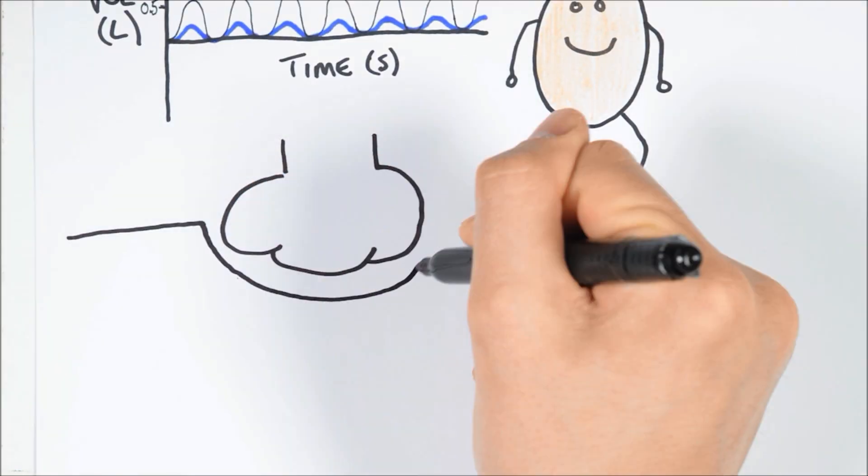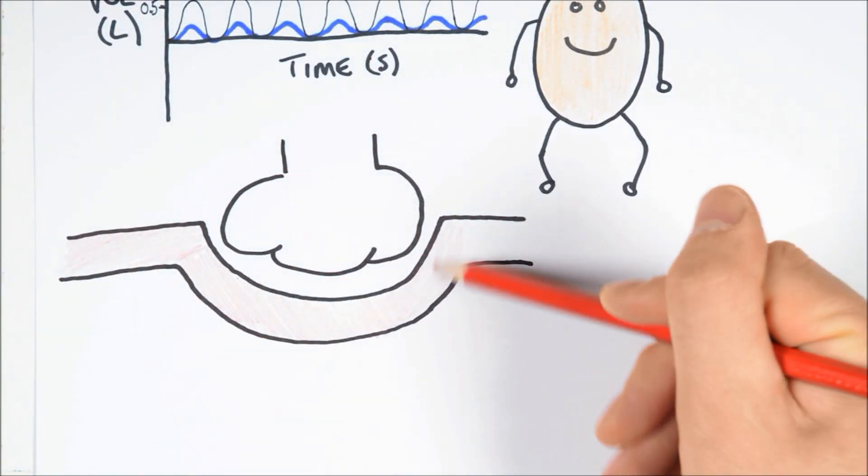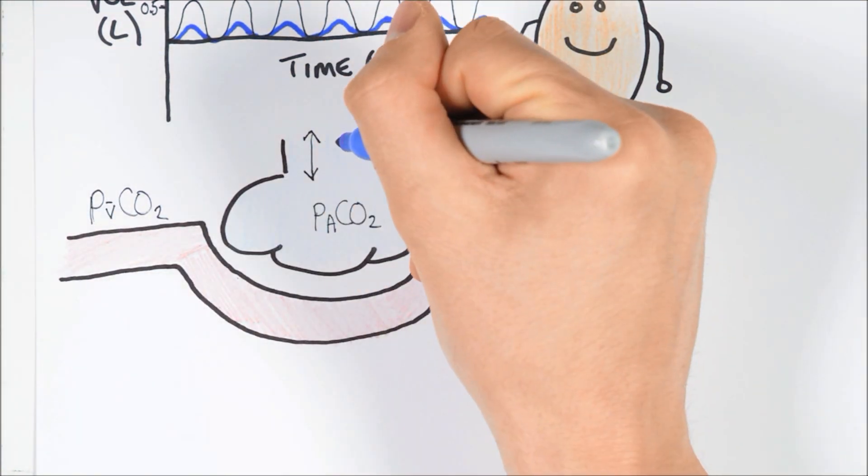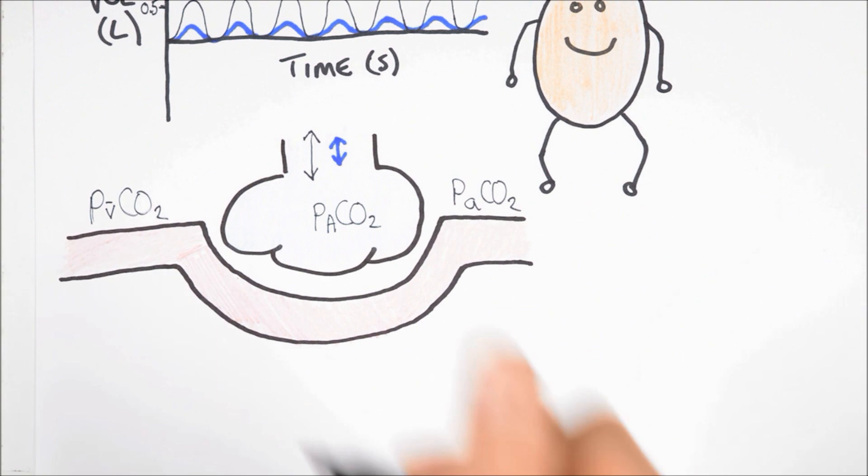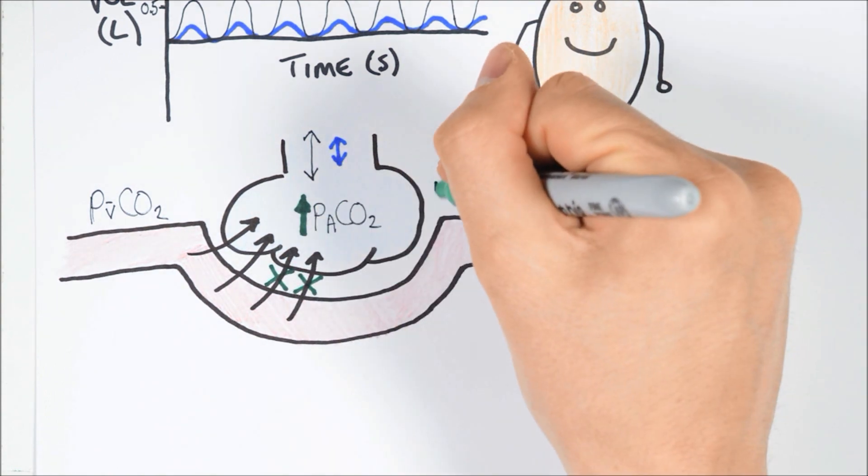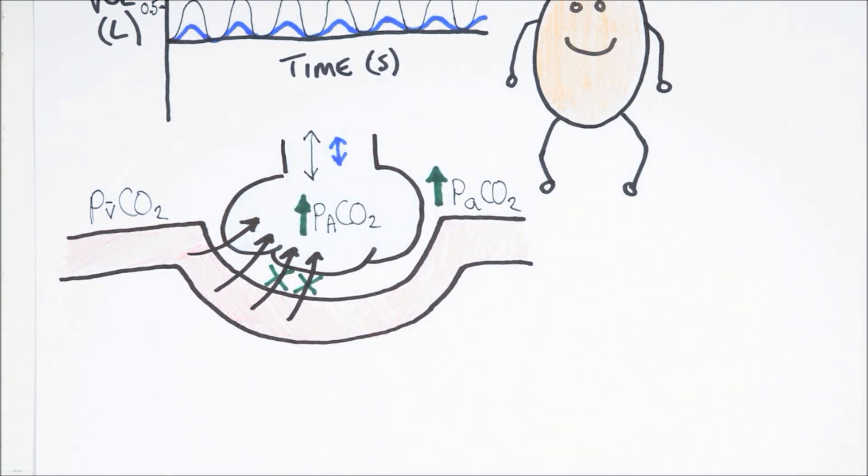Now imagine that the same individual is breathing less than normal. Because of the reduction in minute ventilation, the amount of fresh air reaching the alveoli is reduced, so the amount of CO2 in the alveolar sacs will steadily increase. This reduces the diffusion gradient, causing less CO2 to move out of the blood, and the amount of CO2 in the post-alveolar blood to increase.